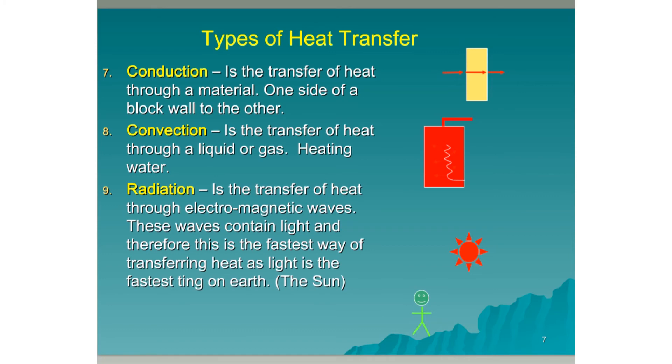The last one is radiation. This is the transfer of heat through electromagnetic waves. The waves contain light and therefore this is the fastest way of transferring heat, as light is the fastest thing on earth. An example of this is the sun. The heat is transferred through electromagnetic waves from the sun down to the earth. This is radiation.